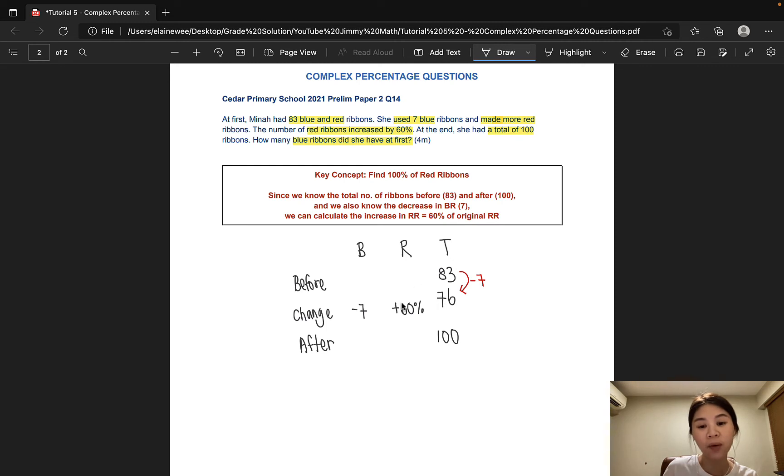So before there was an increase in the number of red ribbons, there was 76 ribbons altogether. After a 60% increase in the number of red ribbons, the total number of ribbons increased from 76 to 100. So let's do a quick math. 100 minus 76 would give us 24. So there was an increase in 24 red ribbons.